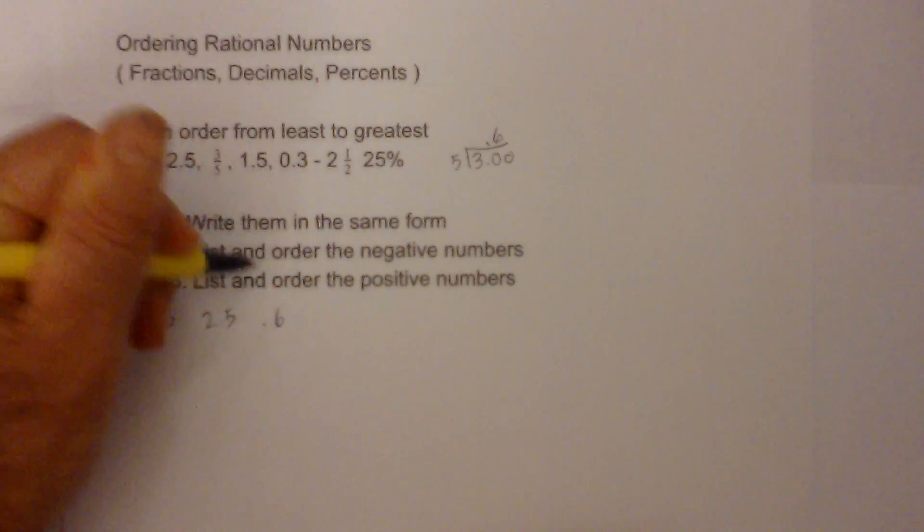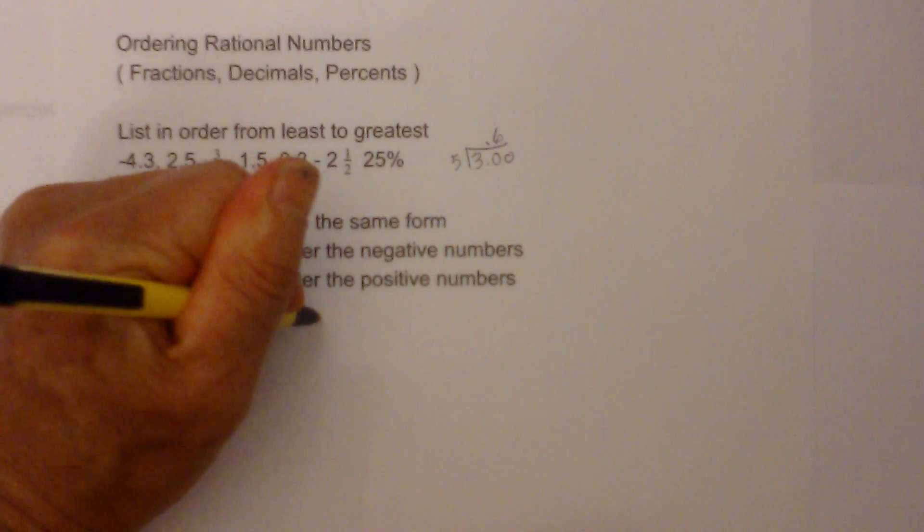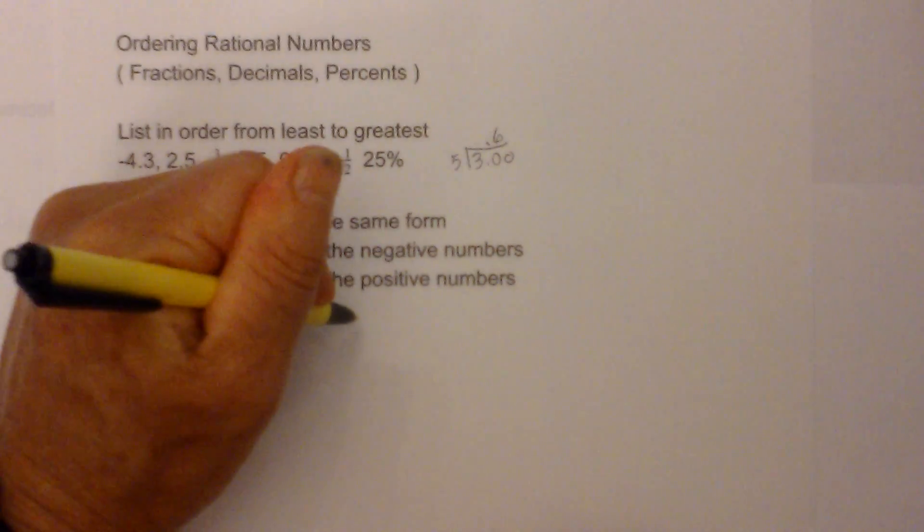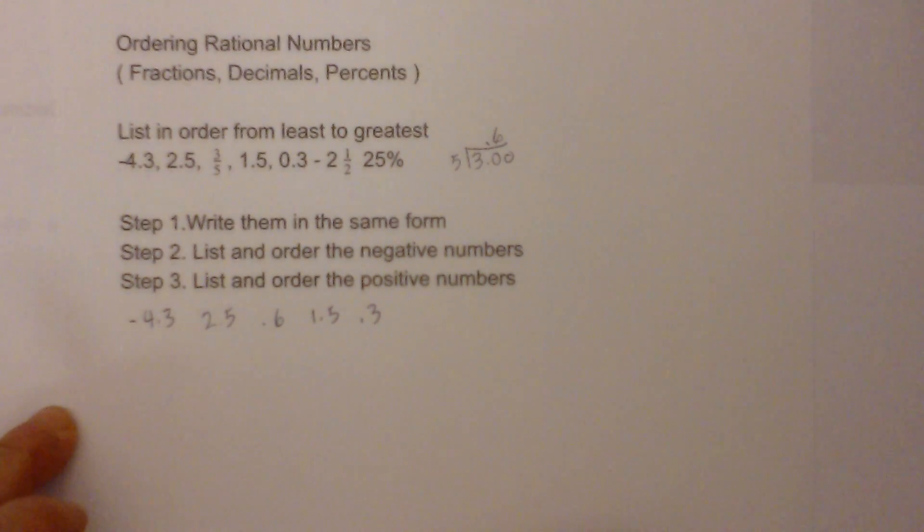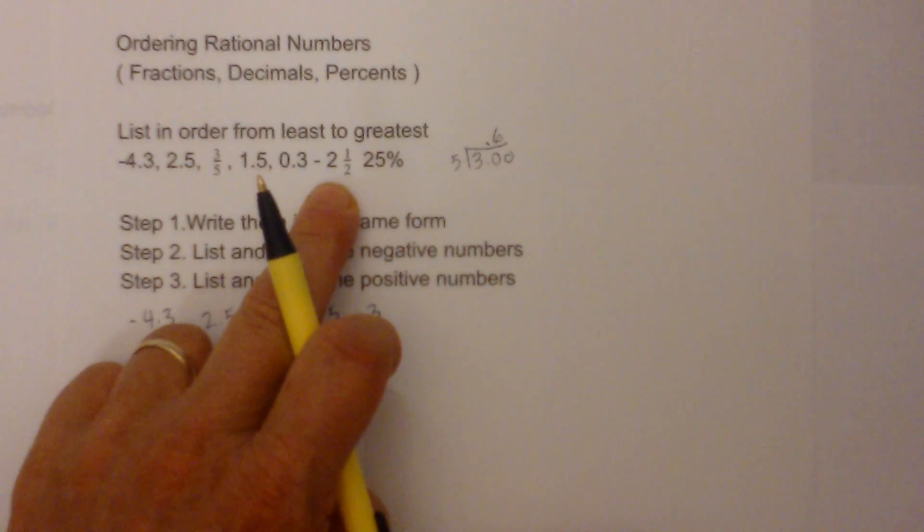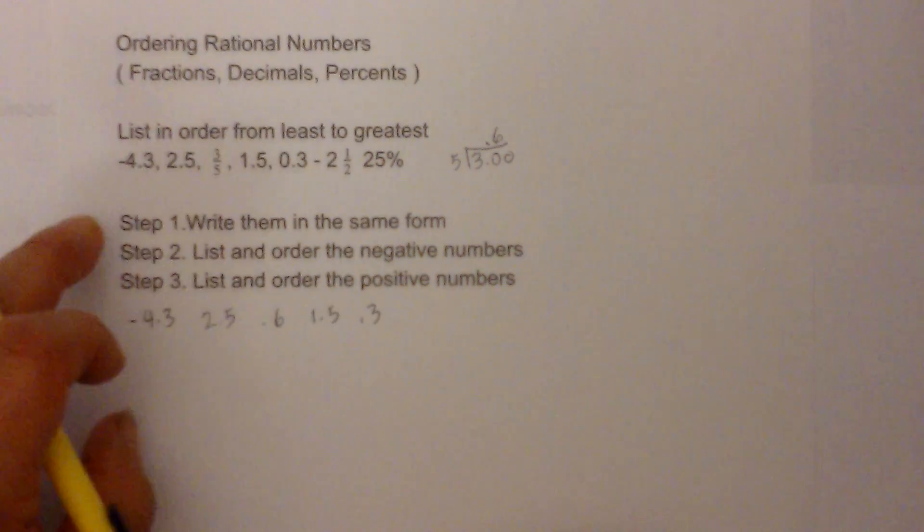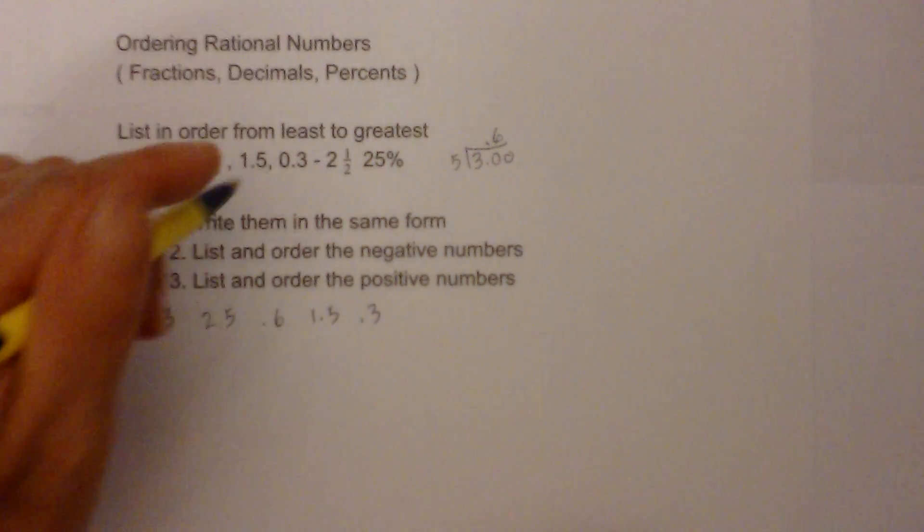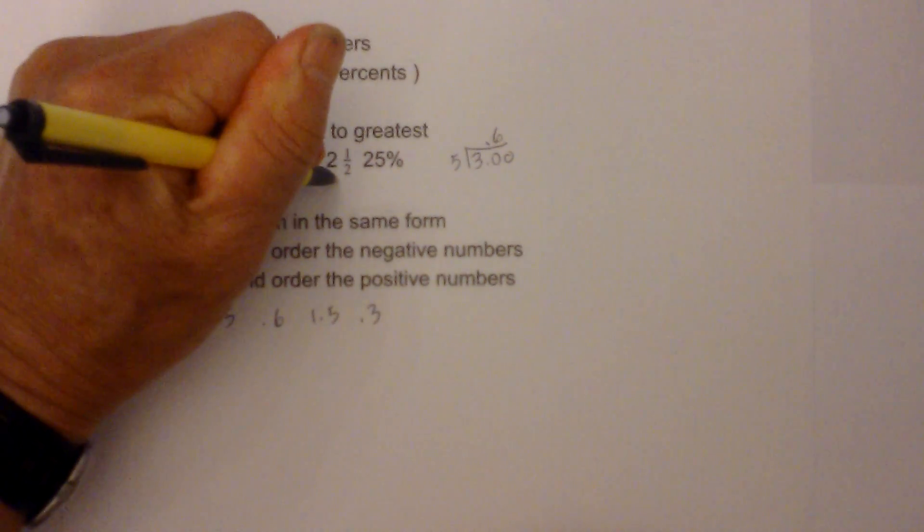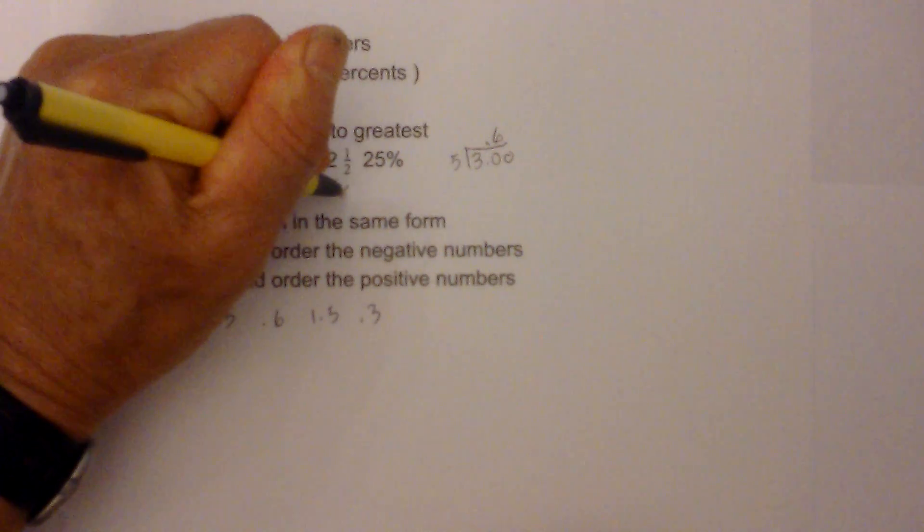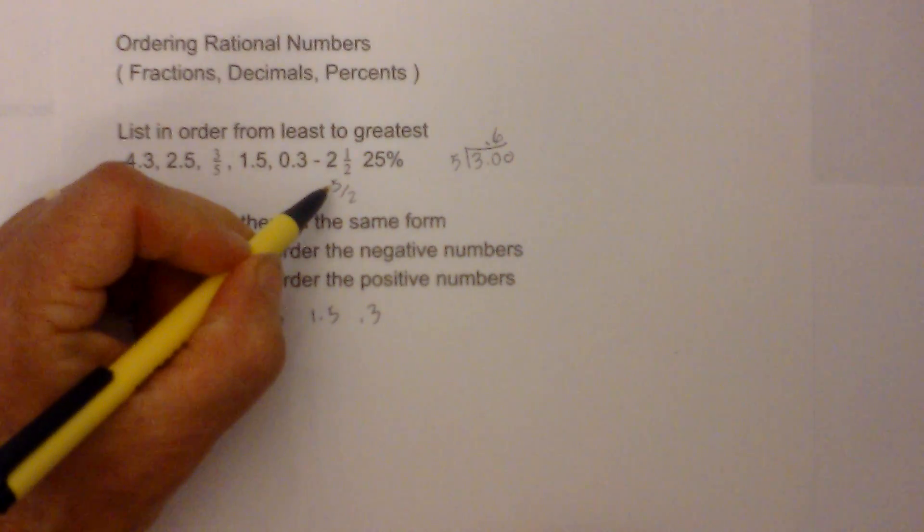Then I have 1.5 and then 0.3 and how about negative 2 and a half. Now I am going to convert it to a mixed fraction, excuse me, an improper fraction and then convert that to a decimal. So 2 times 2 is 4 plus 1 is 5 and it will be 5 over 2, and then to convert this to a decimal, again divide the numerator by the denominator.